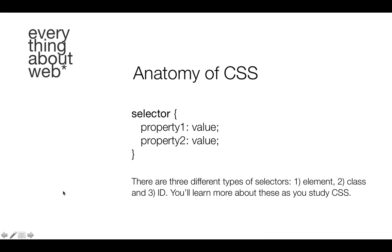So let's take a quick look at the anatomy of CSS. The syntax — the structure of your CSS rule — starts with a selector. In our previous example, that P is our selector; it happened to be an element or tag selector. We've got our brackets, and then between our brackets we have a listing of properties followed by a value. You can obviously have several properties listed.